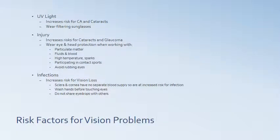Factors that can increase our potential for vision problems include ultraviolet light — it's really important to wear filtering sunglasses all of our lives, especially as we get older. Ultraviolet light increases the risk for cancer of the eye and cataracts. Injury to the eye is also a risk factor, increasing the risk for cataracts and glaucoma. It's important to wear head and eye protection when working with particulate matter, fluids and blood, and high temperature sparks.